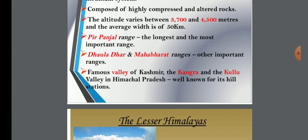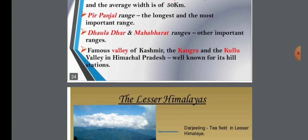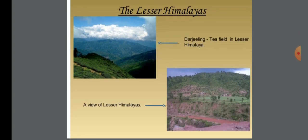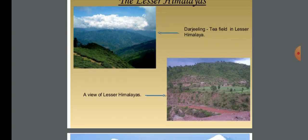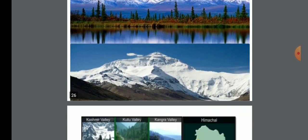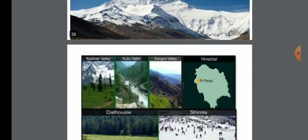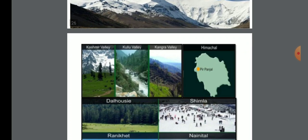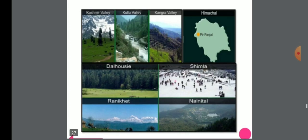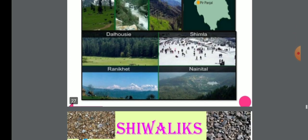The Lesser Himalayas contain famous valleys such as the Kashmir Valley, Kangra Valley, and Kullu Valley in Himachal Pradesh, well known for their hill stations. Important hill stations include Kangra, Kashmir, Kullu, Peer Panjal Range, Ranikhet, and Nainital. These are all part of the Himachal Range.